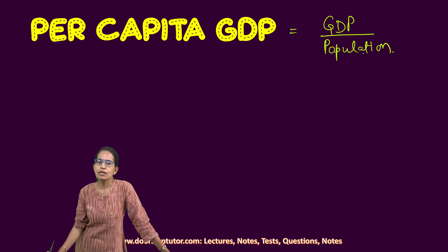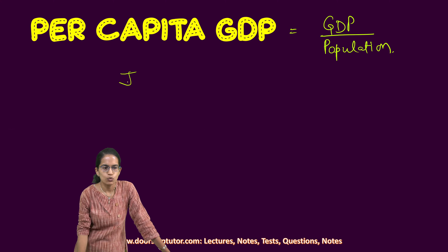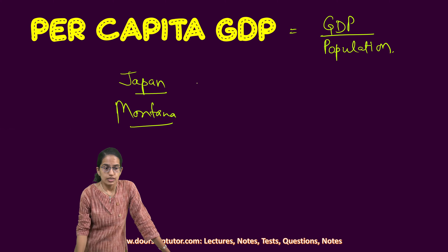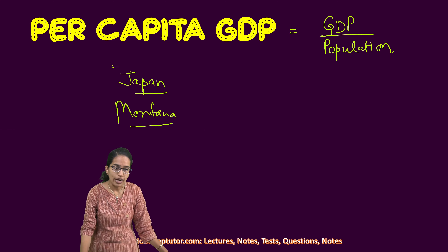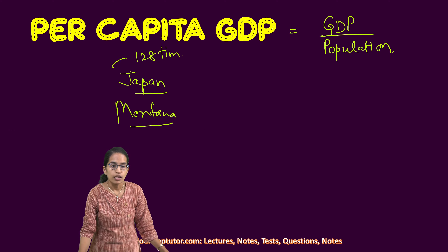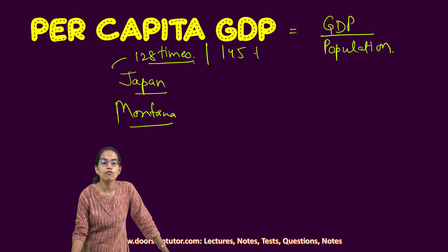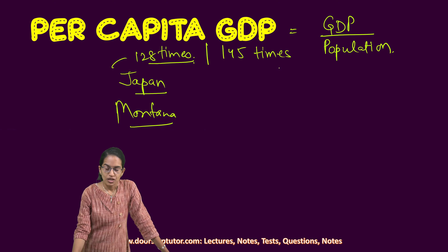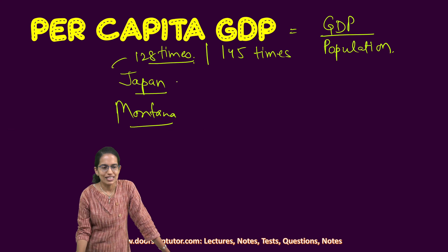Now understand a very important concept. I compare two regions: one is Japan, the other is Montana state of United States. Japan has a population which is nearly 128 times Montana in terms of population. In terms of production it is nearly 145 times the production in Montana. But still both have the same per capita GDP.